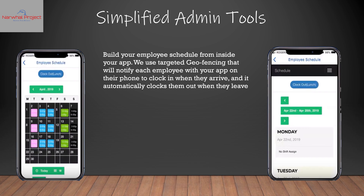The app uses targeted geofencing that will notify each employee whenever they arrive at work — a notification pops up telling them to clock in, and they clock in straight from their app. And when they leave the premises and break the geofence, the app will automatically clock them out.